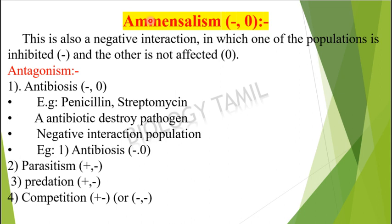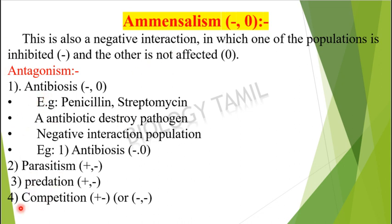We have seen Neutral Interaction. Now we will see Amensalism. The symbol of Amensalism is minus and zero. This is a negative interaction in which one population is inhibited and the other is not affected. Under Amensalism, we categorize antagonism, parasitism, predation, and competition.